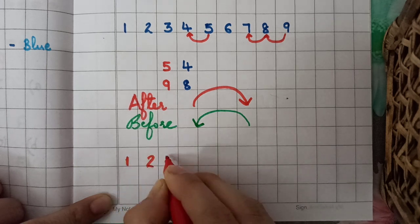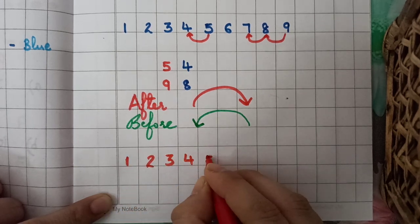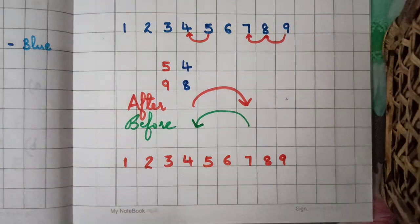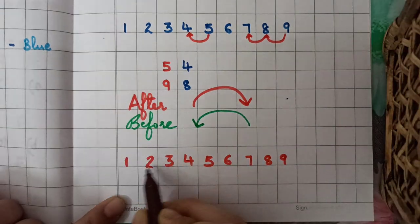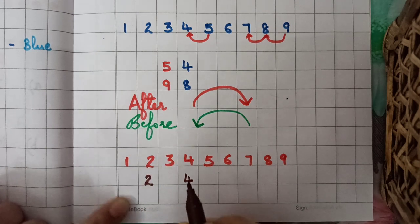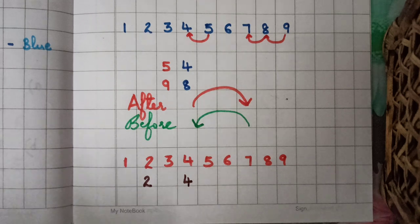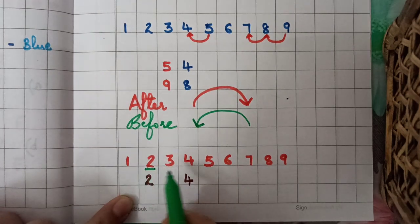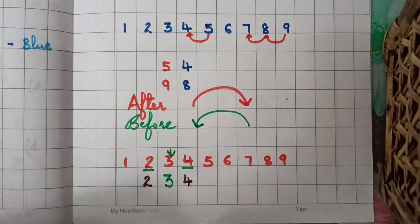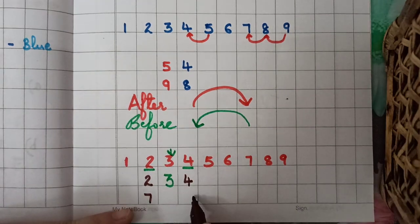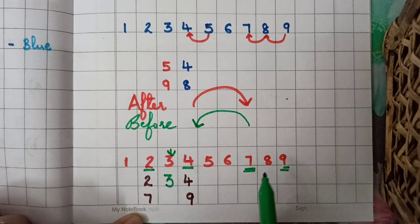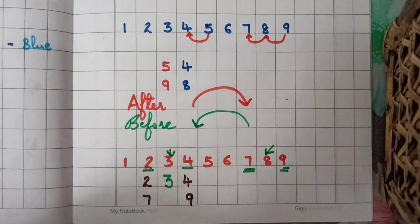Between is an easy concept. Kids they learn it very fast because it is not that tough for them. So, like, we will ask them between, so we will tell them between, so what comes between 2 and 4? So what comes between 2 and 4? So see, we have told them what comes between 2 and 4, it is 3, so the answer is 3. What comes between 7 and 9? See, what comes between 7 and 9? So answer is 8.